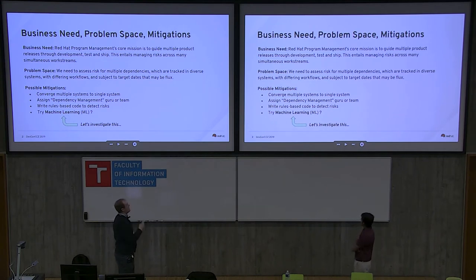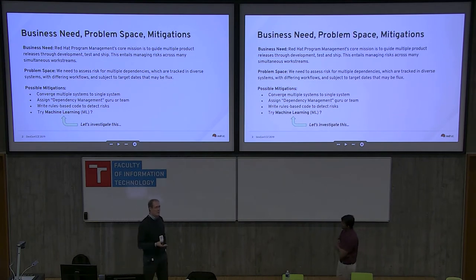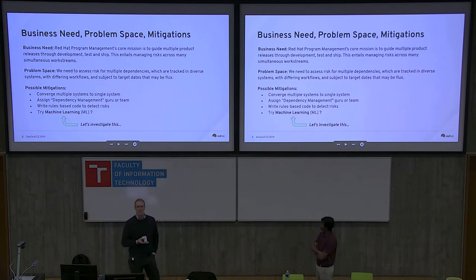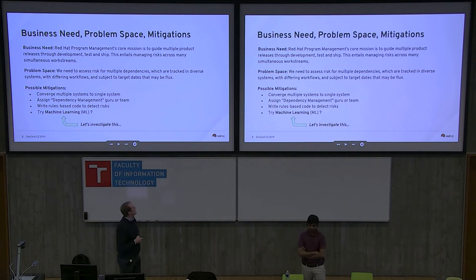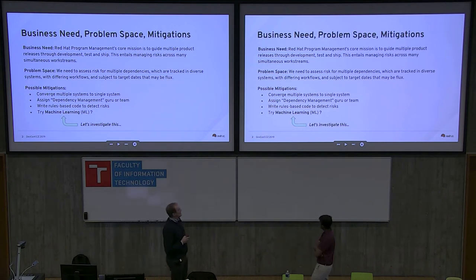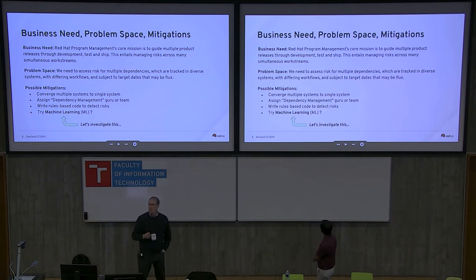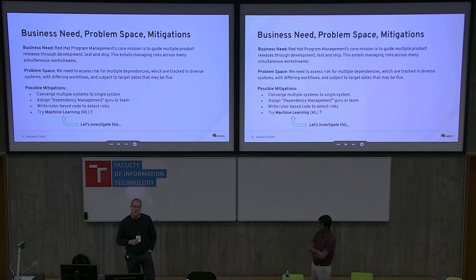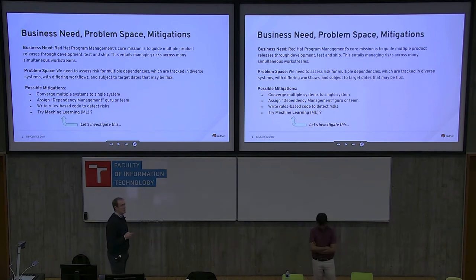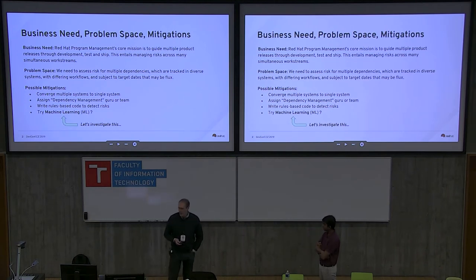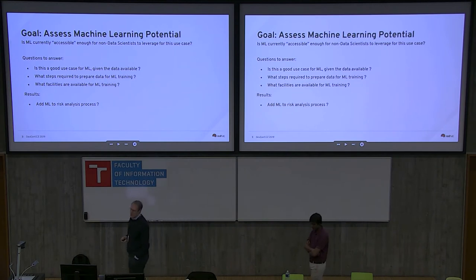So how could you deal with a problem like that? If you have a lot of systems that don't work together well, maybe you just go to one system and get rid of the problem that way. That's what we call the dream-on scenario. You could also assign a dependency management guru to understand how all the systems work and manage them manually. You can write some rules-based code in the form of scripts or plugins. Or you could try to point some machine learning at the problem — that's what we're going to explore today.